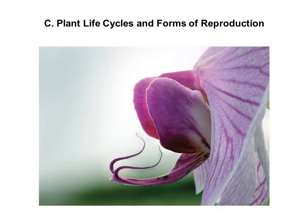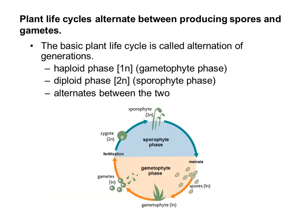This section of notes is over plant life cycles and forms of reproduction. The basic plant life cycle is called alternation of generations and consists of a haploid phase, which is 1N, and a diploid phase, which is 2N. The haploid phase is called the gametophyte phase, and the diploid phase is called the sporophyte phase.